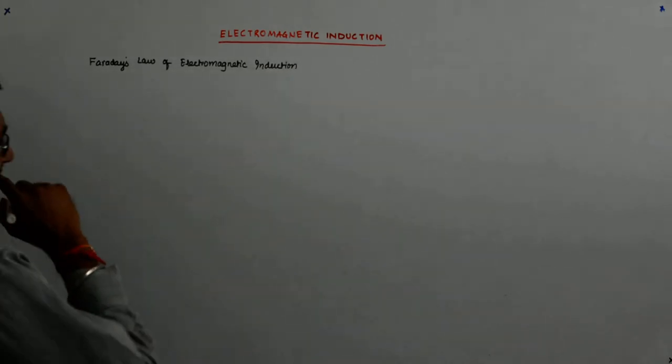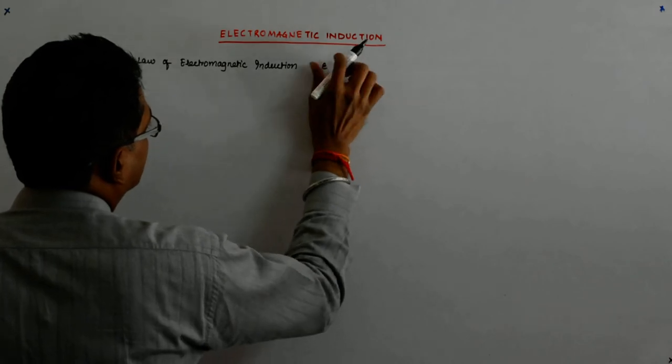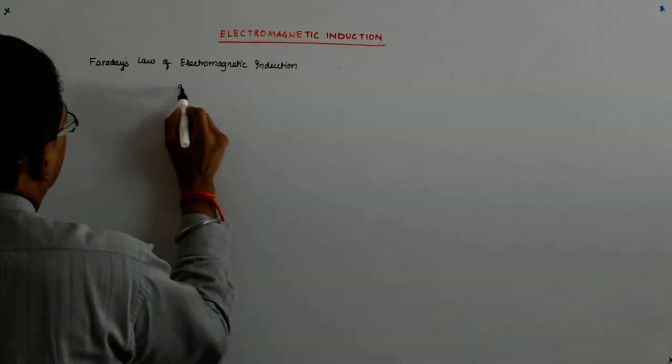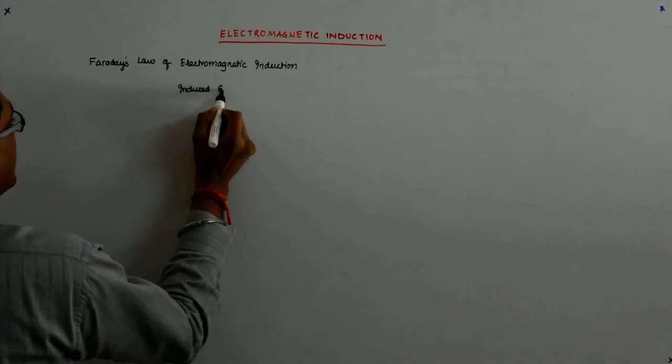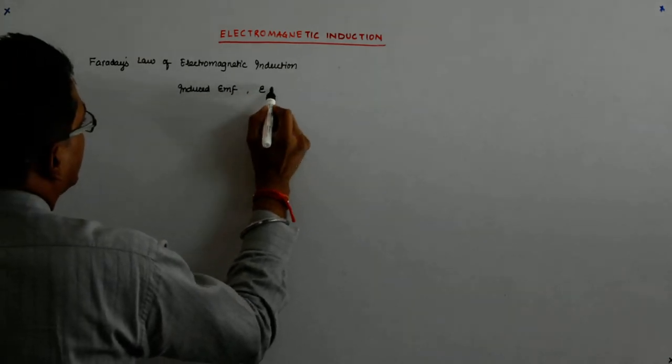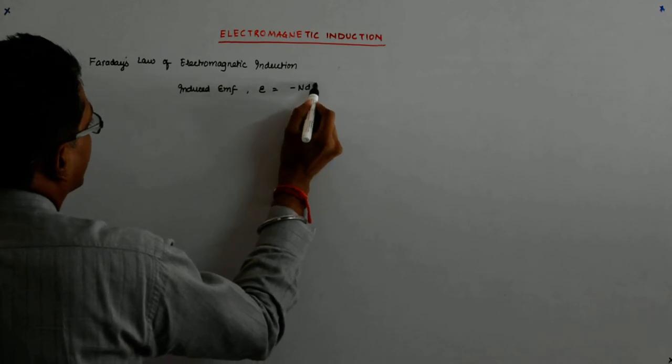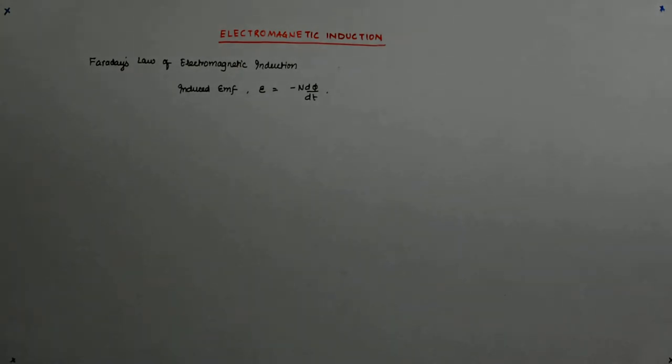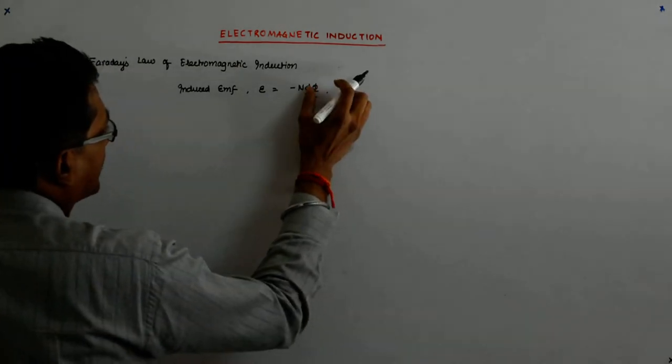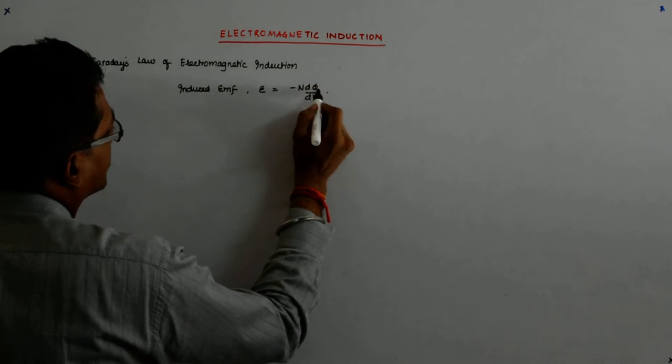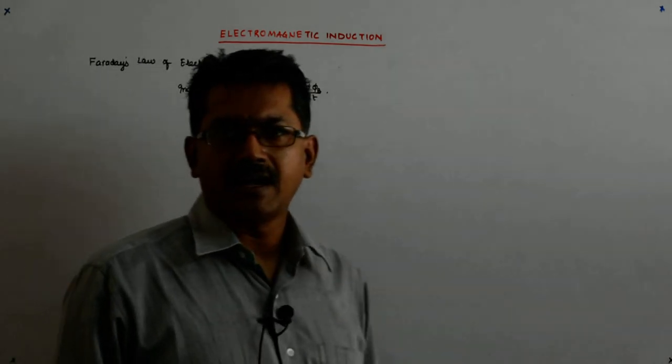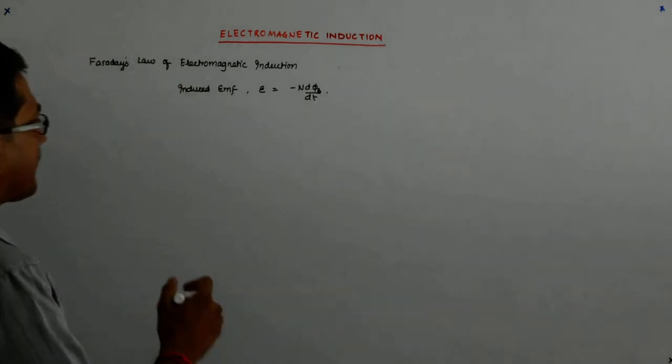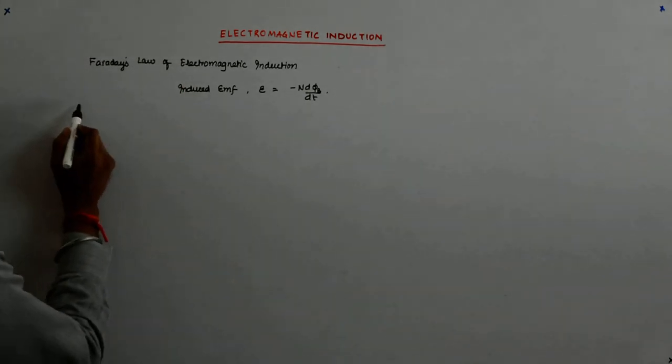tells us that the induced EMF E is minus N dφ/dt. This phi is actually a magnetic flux, so I show it as phi B, because we also have electric flux.